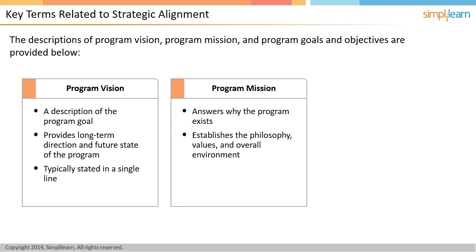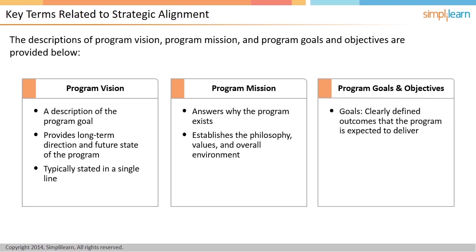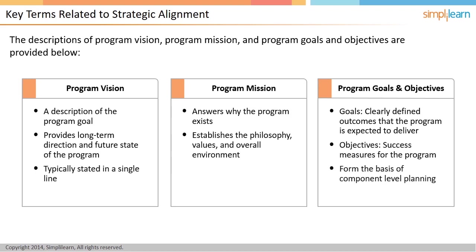The mission is typically a narrative such as: we shall try to improve the profitability of the organization, we shall provide rewarding careers to employees, we shall maximize the returns to the shareholders. The goals are clearly defined outcomes that the program is expected to realize. The outcome could be tangible — for example, specific deliverables — or intangible, for example, improved team morale. Objectives specify the success measures for the program; for example, an efficiency or productivity figure that the program strives to achieve. The goals and objectives are cascaded to the components of the program and form the basis of component-level planning.